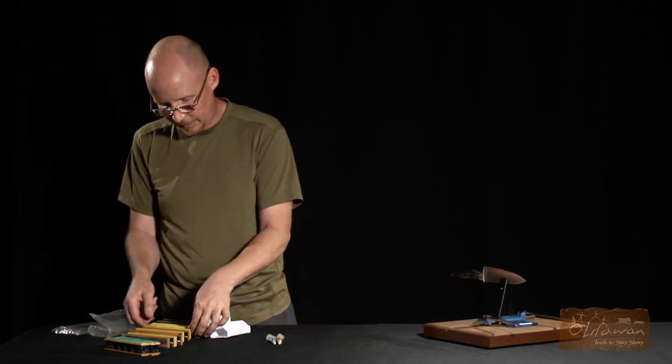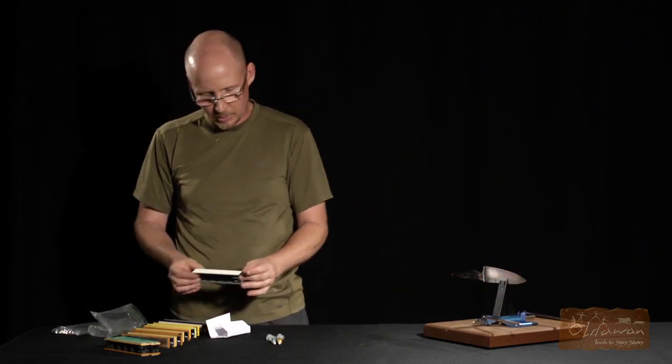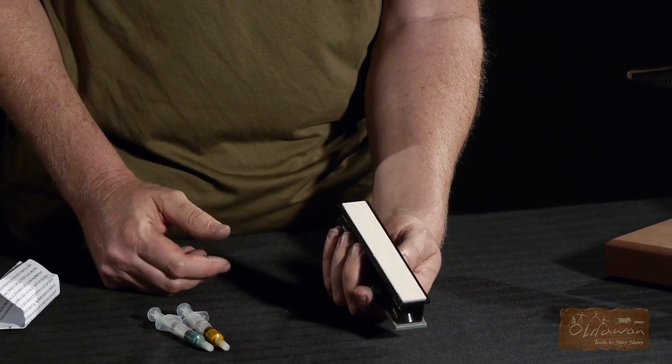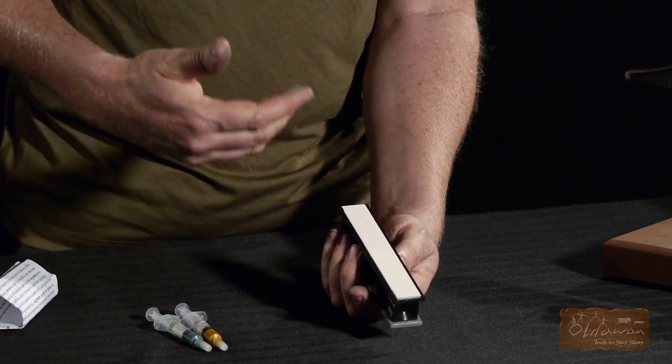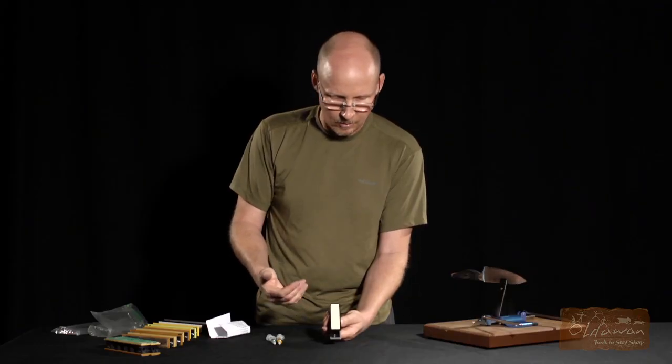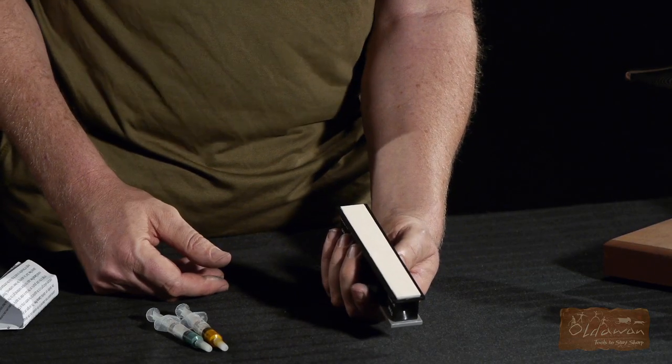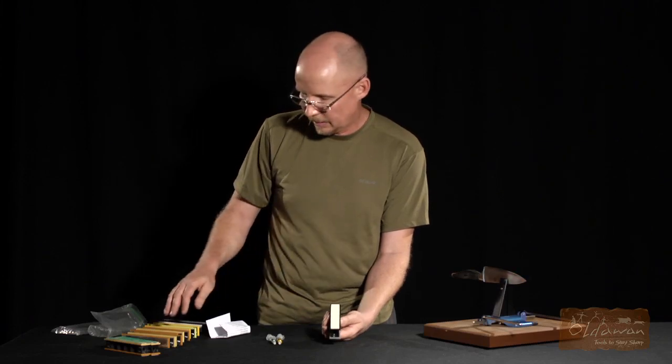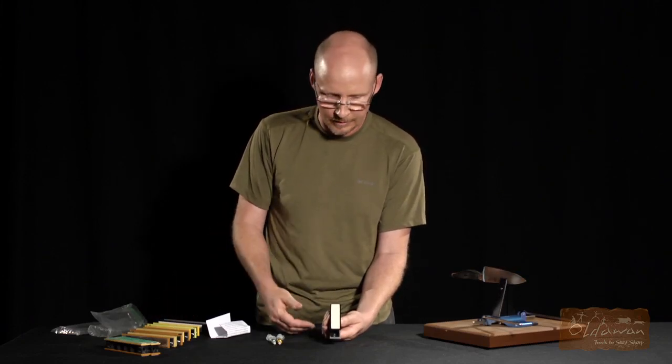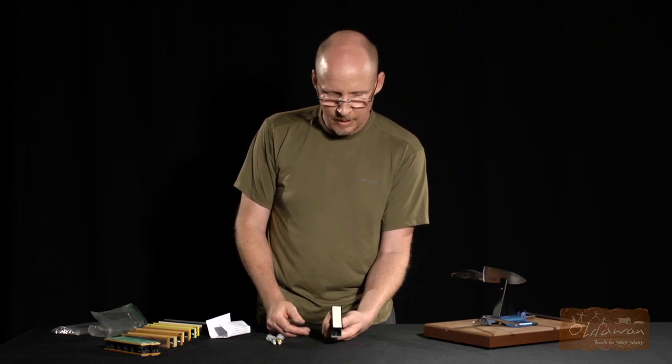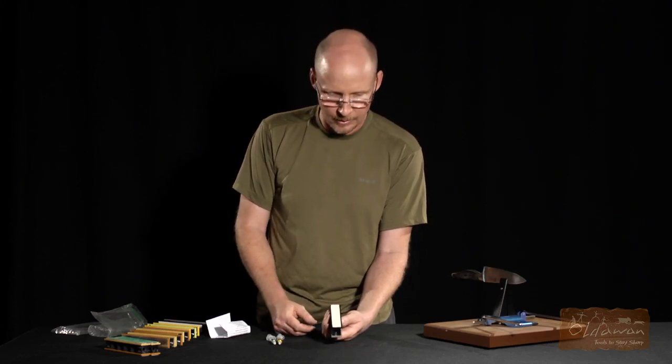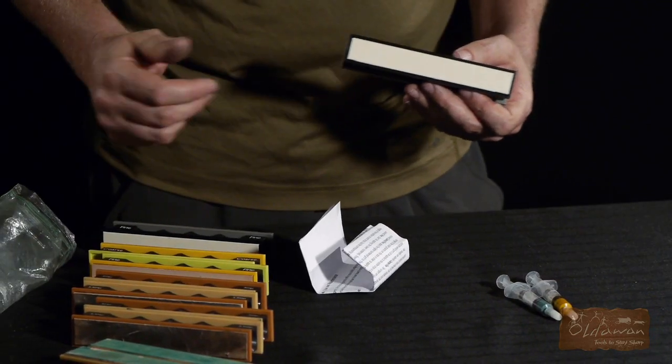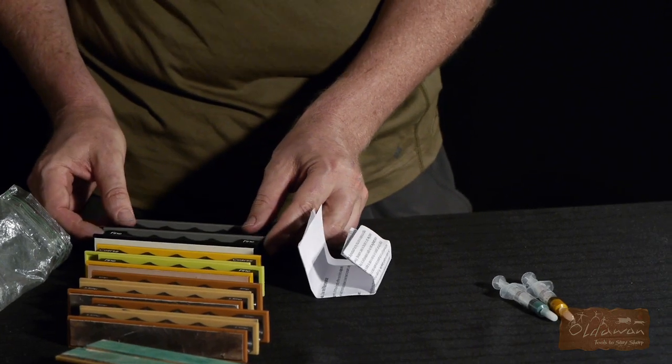When you get down into the really fine grits, a quarter micron or smaller, Ken Schwartz also does a material called Nanocloth, which is a virtual texture-free material. So when you put your emulsions on this in either a CBN or a polycrystalline diamond or a monocrystalline diamond material, you're really going to see that particular grit shine. You're not going to get an over-effect, it's not going to be overwhelmed by the substrate that it's on. You'll really be able to see the results of the polishing with those really fine grits producing your mirror finishes. So that's the leather, the balsa, the kangaroo, and the Nanocloth are the four that we carry for the Wicked Edge system.